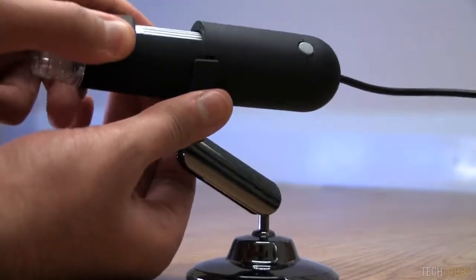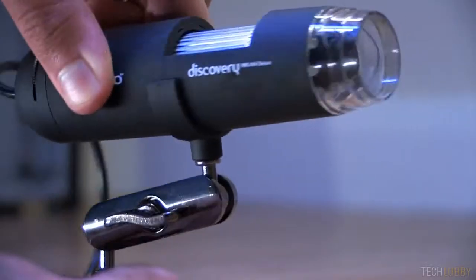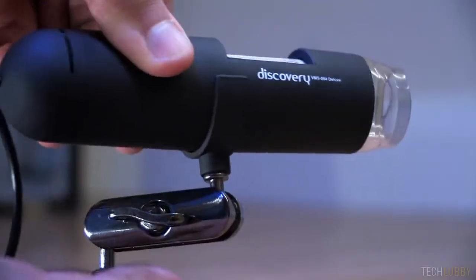Underneath the microscope there are two slots which allow you to connect the microscope to the metal stand. The stand allows free movement so you can easily position the microscope to what is required.